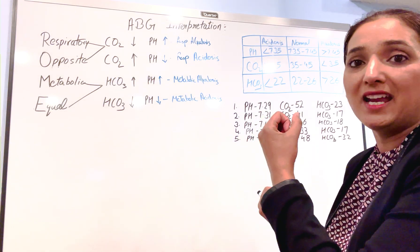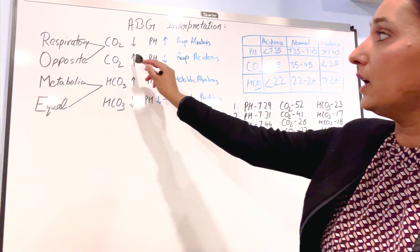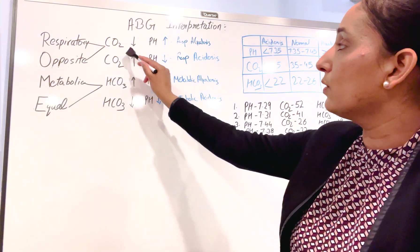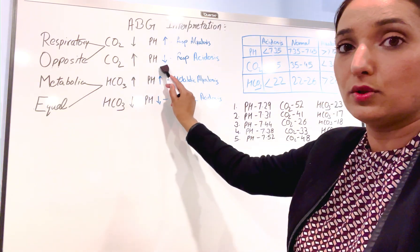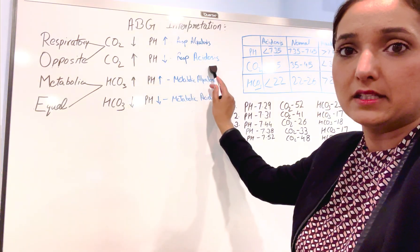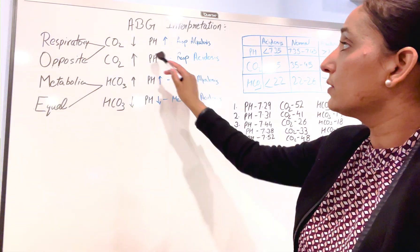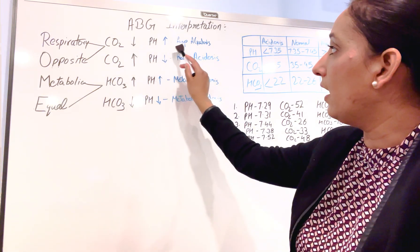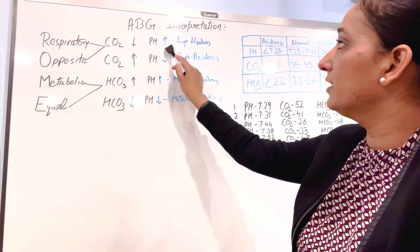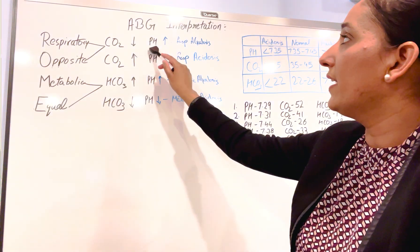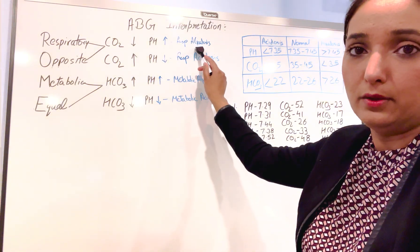Higher the carbon dioxide, lower the pH — so they go opposite. Higher CO2 means lower pH, that means respiratory acidosis. Lower CO2 means higher pH, that means body is going into respiratory alkalosis.